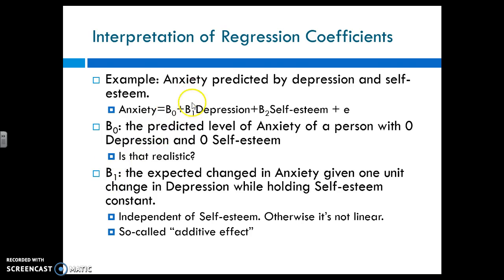So beta one right here, this number for depression, this idea, this is the expected change in anxiety based on their depression score. So if we change depression one unit, this is the predicted score of anxiety holding everything else constant. So holding self-esteem constant, holding beta zero, which is a constant, holding everything else constant. If I increase depression one unit, then that number is the amount of anxiety that will increase. So this is an additive effect.